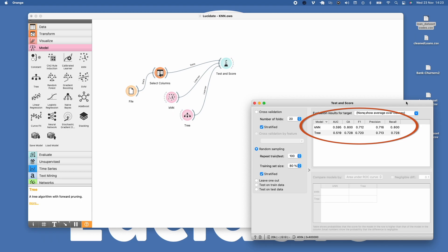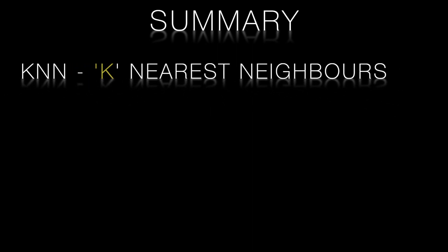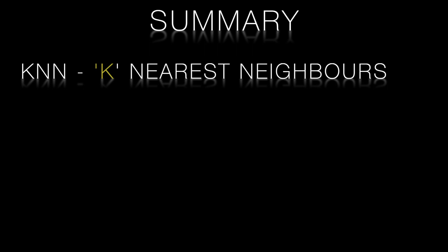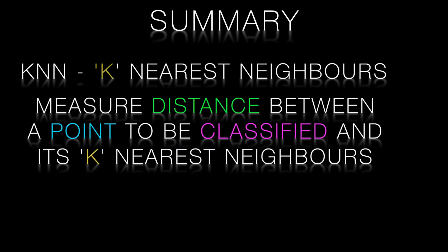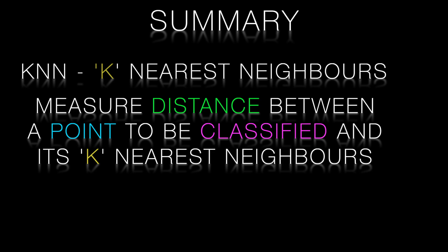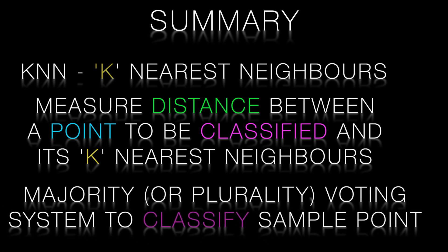In summary, the K nearest neighbor's algorithm is simple but effective. It uses a hyperparameter K and measures the Euclidean distance between a sample point to be classified and its K nearest neighbors. It then uses a majority or plurality voting system. Each of the K neighbors gets a single vote for its own class. The classification of the sample point is simple, based on the most votes received.